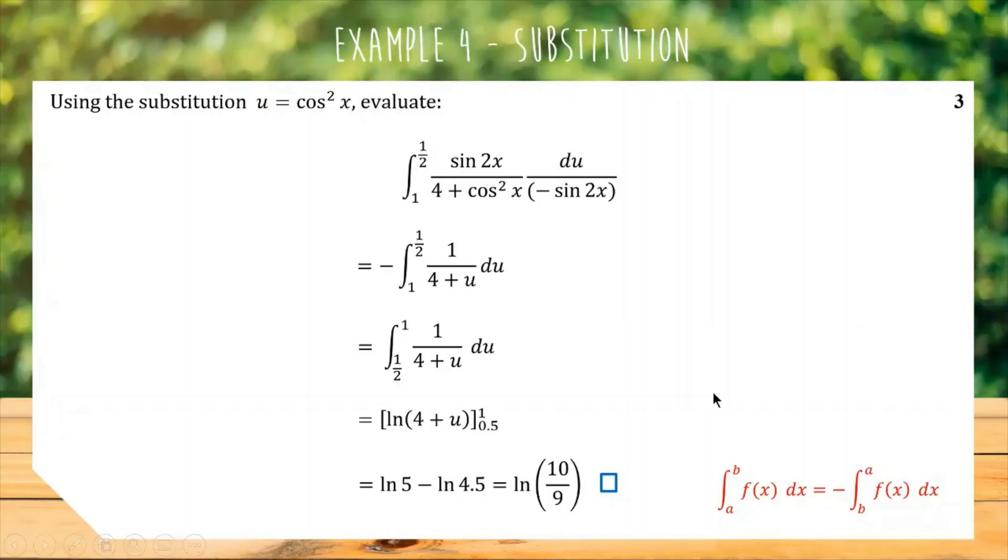If you managed to get that by yourself, you are a superstar and maybe you should be teaching me. So this is a good example of a difficult question involving a pretty complex substitution. You've got limits to change that end up backwards. But again, you can ignore them if you want or you can fix them. And we've got some further trig in here. So this is a pretty tough 3-mark question. But if you know your stuff and you follow the steps, you do everything right—not too stressful.